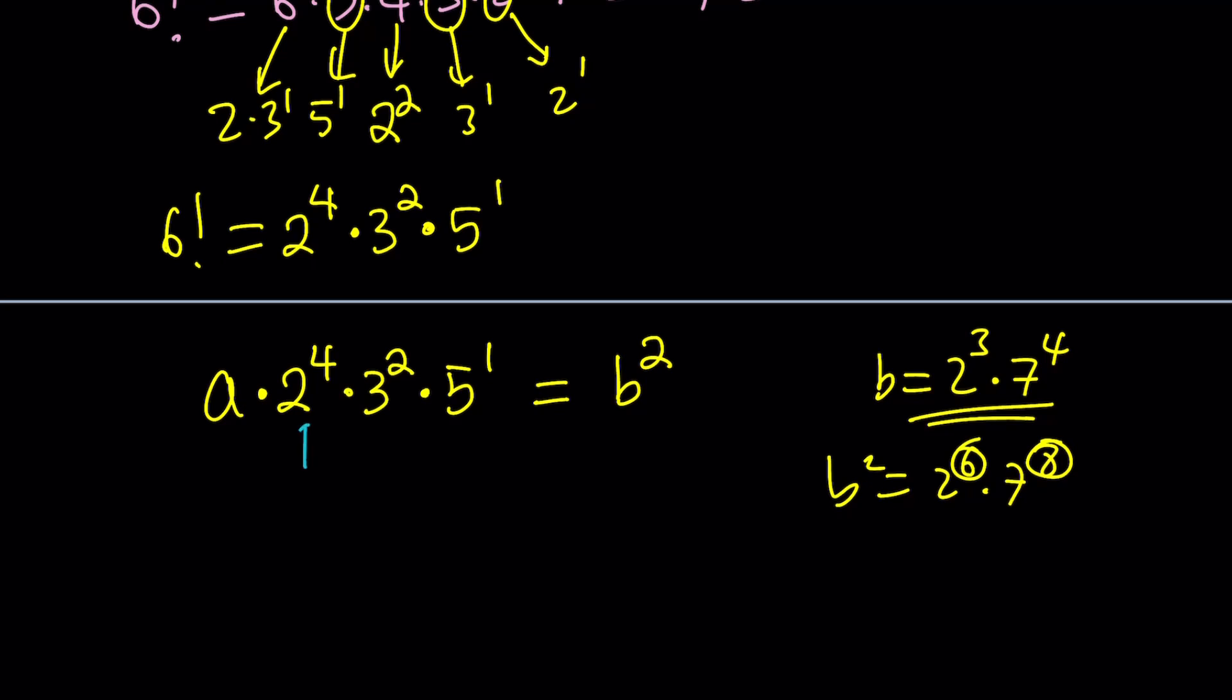So notice that this is an even power and that's also an even power. But 5 to the 1st is not an even power. 1 is not even. But we can make it even real quickly by multiplying it by another 5, which is going to make it 5 squared. So a can be 5. But it's just one of the values that can happen. How do you find all the possible values? And how many values are there? Is there only one solution? Let's find out.